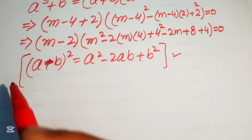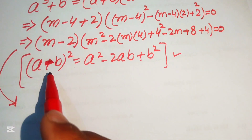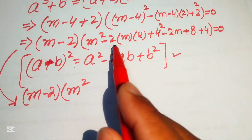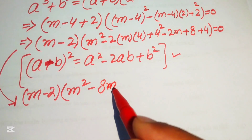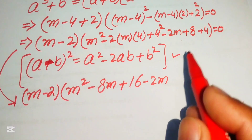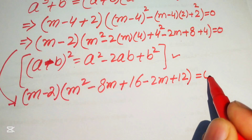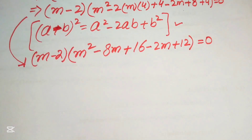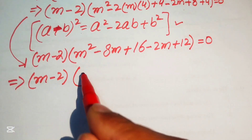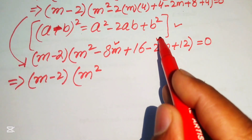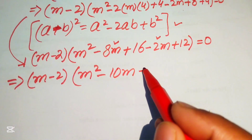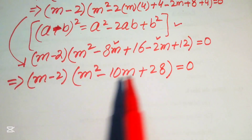After further simplification, we collect like terms inside the second factor: -8M - 2M = -10M, and 16 + 12 = 28, giving us (M - 2)(M² - 10M + 28) = 0.